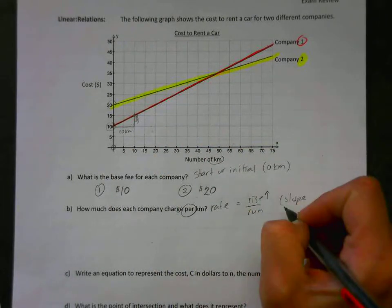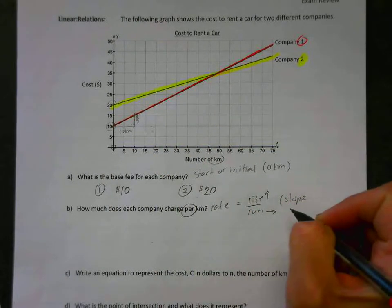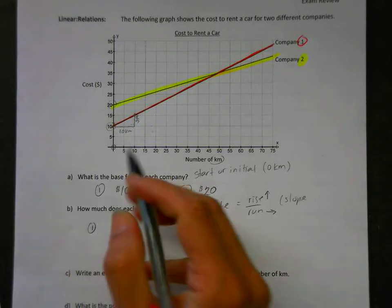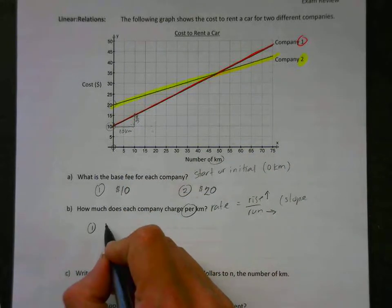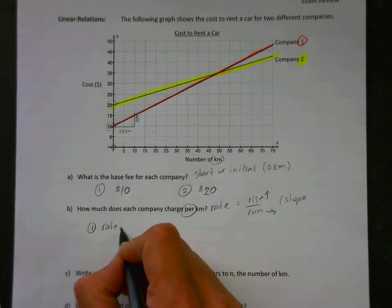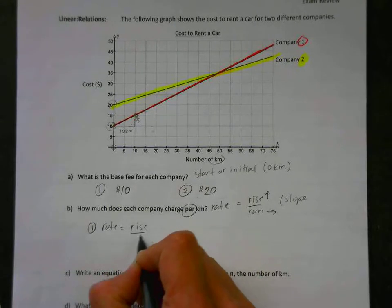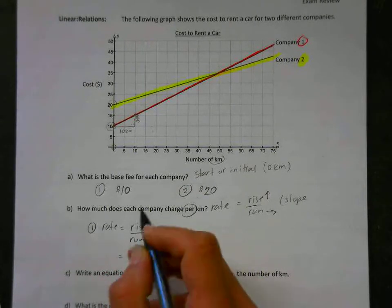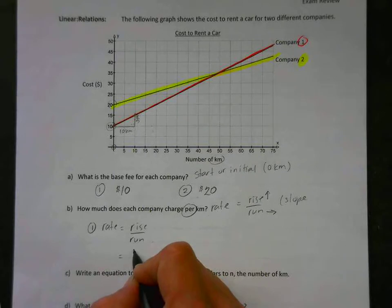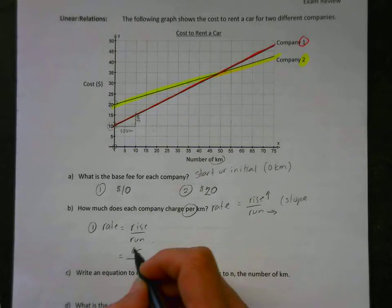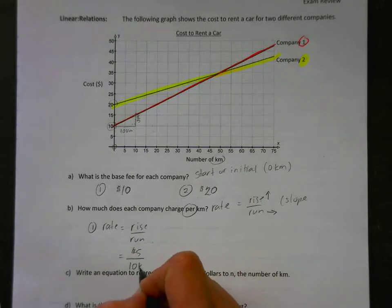Now what I want to look at is: what is the rise? The rise goes up here and it goes from ten to fifteen, so it's gone up five dollars. So our rise, we're going up. The run, we're going to the right. So for number one, which is the red one, our rate is equal to rise over run, which happens to be a rise of five dollars, and that's over ten kilometers.